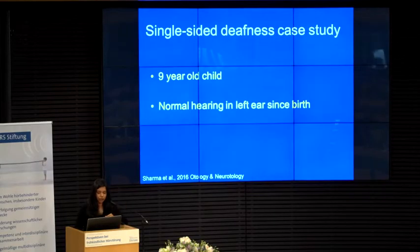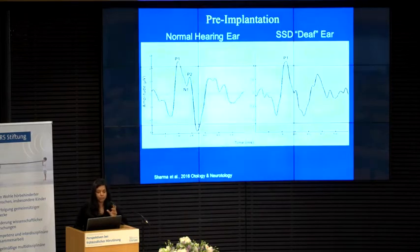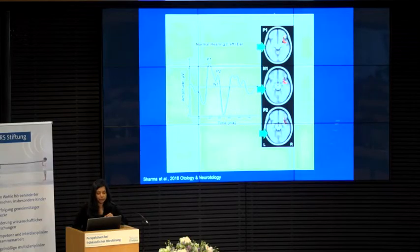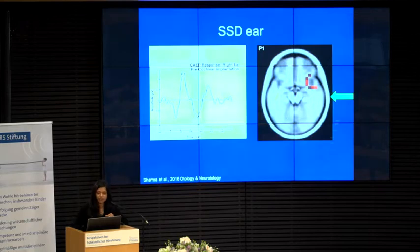I want to end with a case study looking at auditory plasticity and higher-order plasticity to examine intervention. Single-sided deafness is a controversial topic in the United States because the implant for it is not FDA-approved, though I know in Germany it is. This is a nine-year-old child who was deaf since birth and then had a progressive severe loss. For the normal hearing ear, we see the P1 but also an additional N1-P2 response coming from secondary cortex. In the single-sided deaf ear, you only see a delayed P1. For the normal side we see contralateral activation as expected, and for the deaf side — very similar to Kral's cats — we see ipsilateral activation, showing some abnormalities in the auditory system.